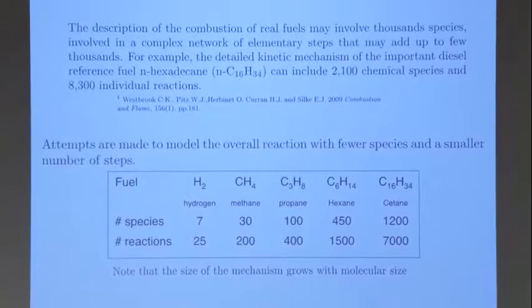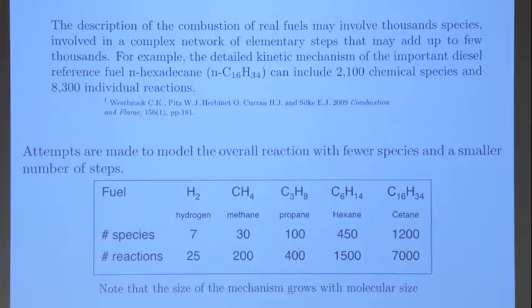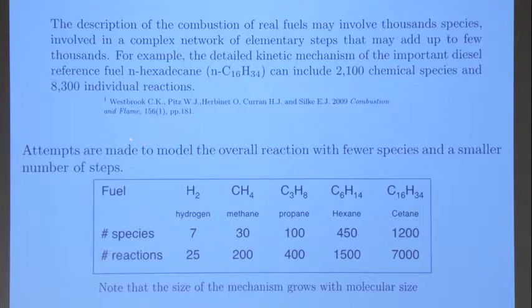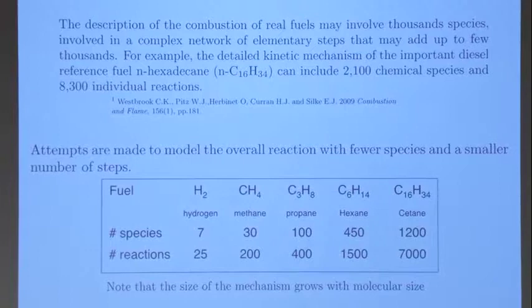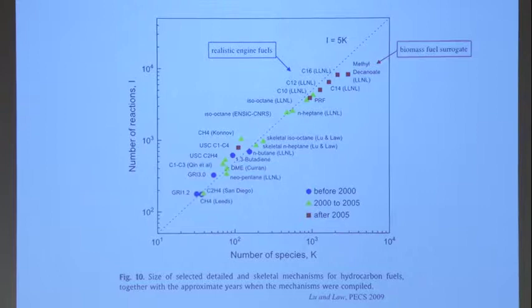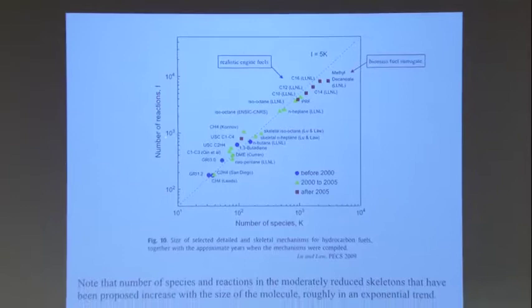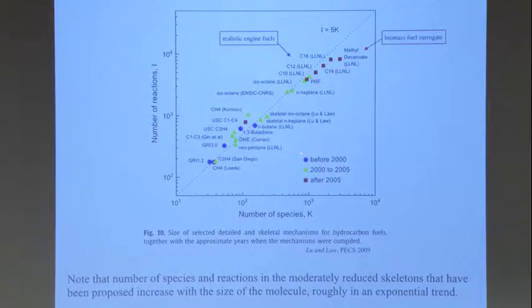Many fuels must be described by a very large number of species. More real fuels like aviation fuels require a huge number — like 2,100 chemical species and 8,300 individual reactions, according to Westbrook and coworkers on some aviation diesel reference fuel. This is rather complicated, and there is a graph from a paper by Luo and Law describing the different number of reactions as a function of the number of species and what has been achieved over the years.